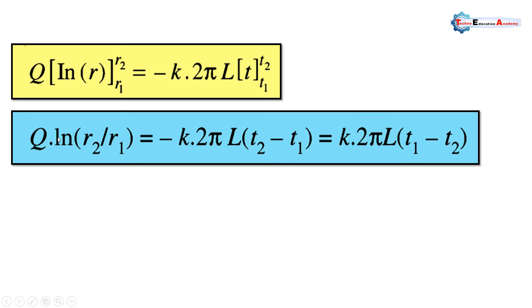So ln(r2/r1) equals minus k·2πrl, which remains the same because it is constant. Then we apply the upper and lower temperature limits to get t2 minus t1.